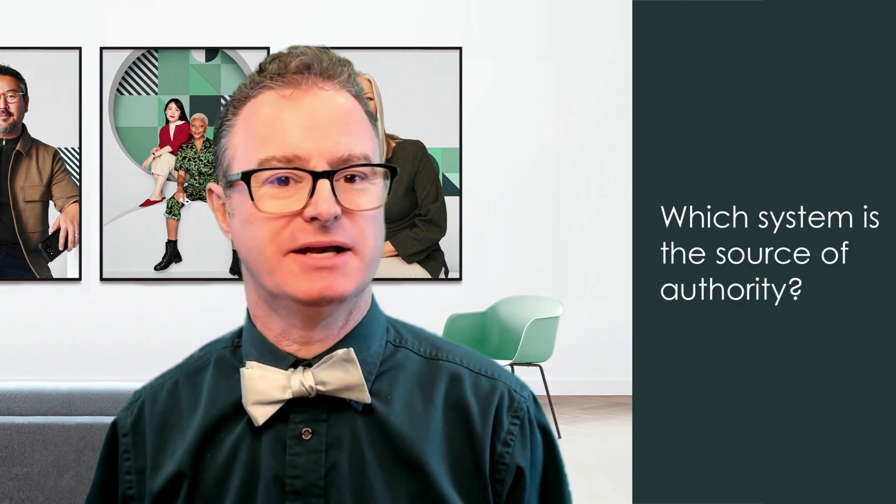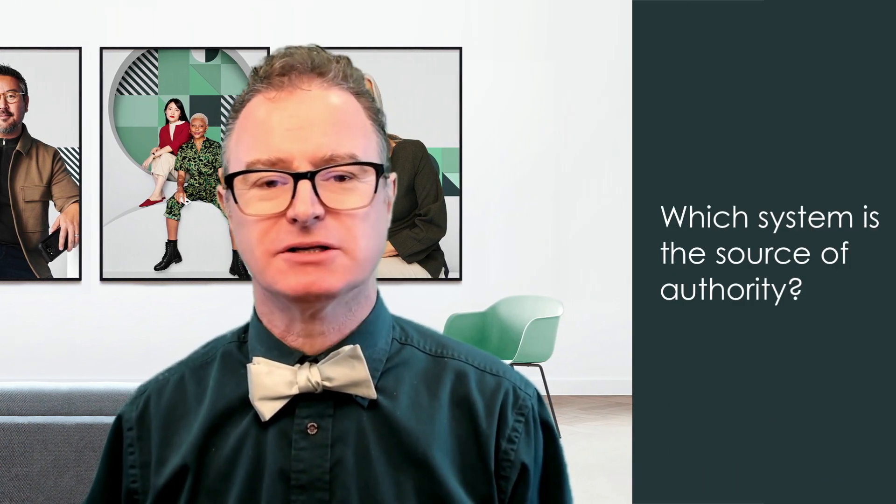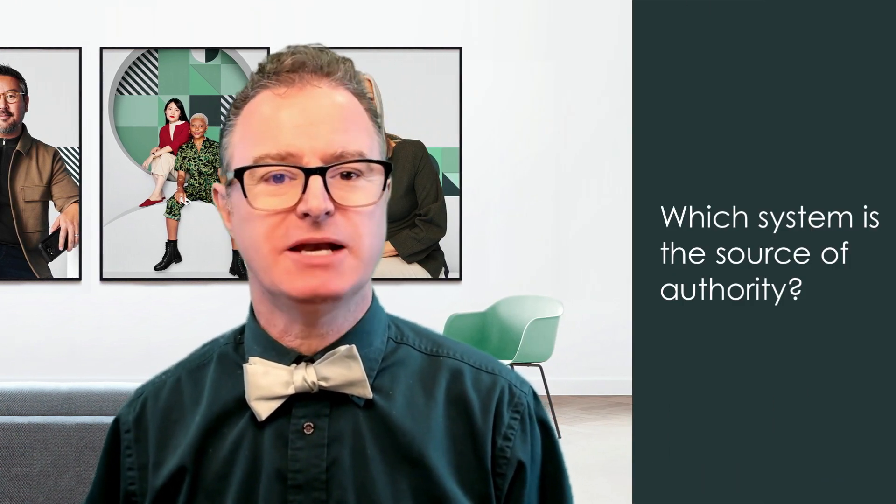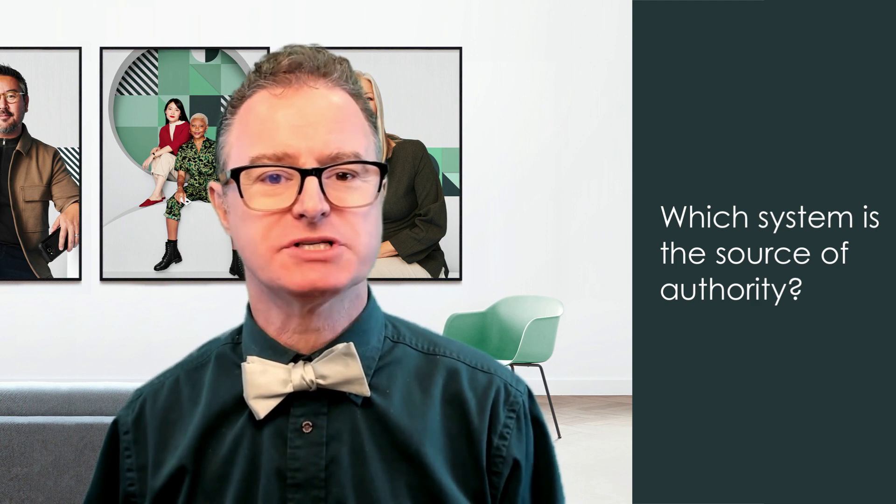Is there a source of authority on the data? In a bidirectional integration, you may need to define which system has the final say if something becomes out of sync. For example, the HR system may be the source of authority, even though the Now Platform receives information from the HR system and also sends it updates.